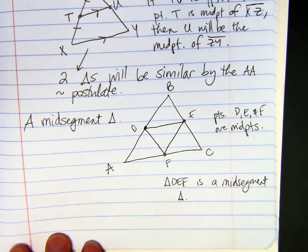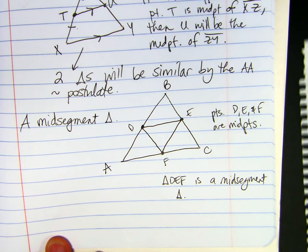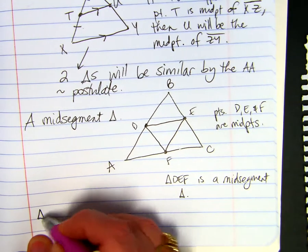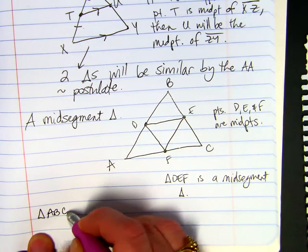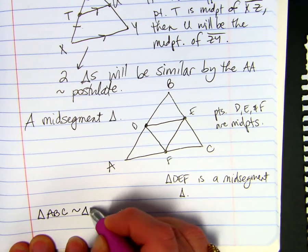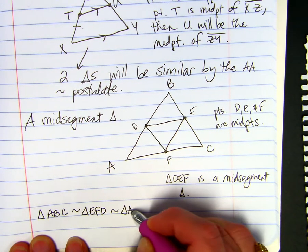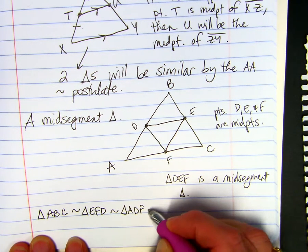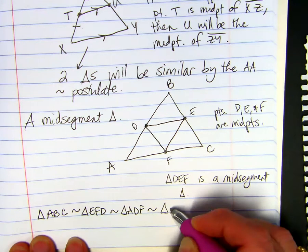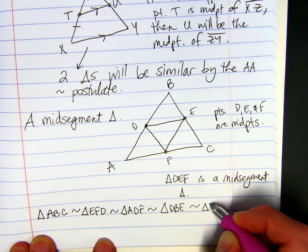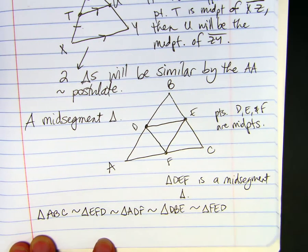So triangle ABC will be similar to triangle EFD, similar to triangle ADF, similar to triangle DBE, similar to triangle FEC.